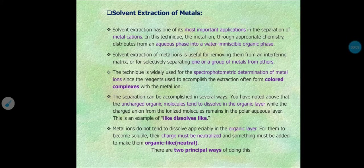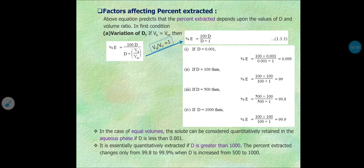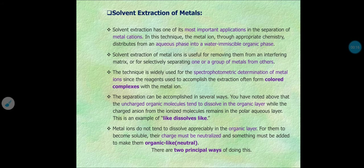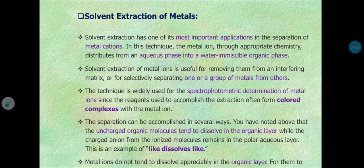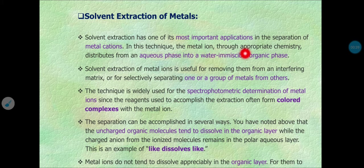In the previous lecture we discussed the relation between distribution ratio and distribution coefficient, and factors affecting it, and then solvent extraction of metals. Solvent extraction has one of its most important applications in the separation of metal cations. In this technique, metal cations or ions, through appropriate chemistry, distribute from the aqueous phase into the water-immiscible organic phase.